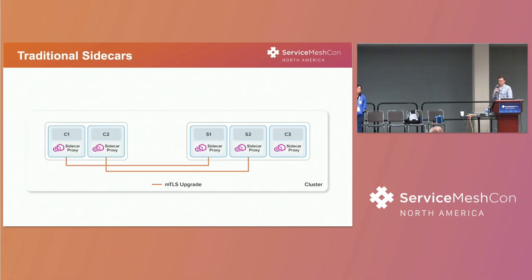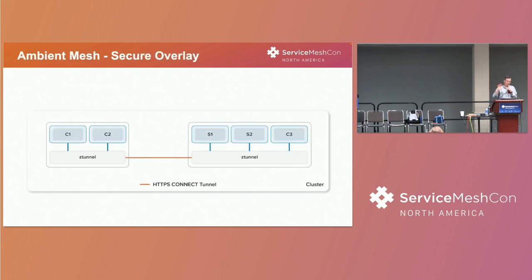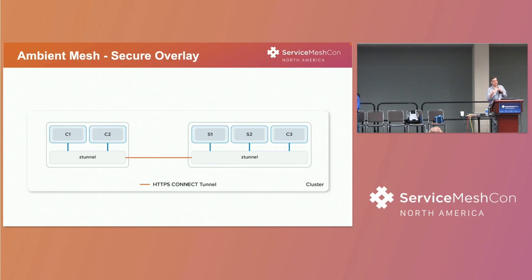Here's a picture of traditional sidecars. You can see we have five workloads, and for each workload there is a sidecar proxy within the same pod. The approach we took with ambient is that we broke apart the proxy into two parts. We're providing L4 policies separately from L7 policies. At the lowest layer we have the L4 policies, which we call the secure overlay. Instead of having sidecars, we take the proxy we're calling zTunnel and run it as a daemon set on the node — so instead of one proxy per workload, we have one proxy per node. That zTunnel is responsible for doing the MTLS connections between itself and other zTunnels.